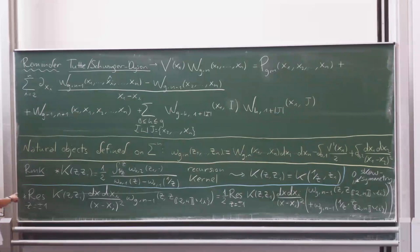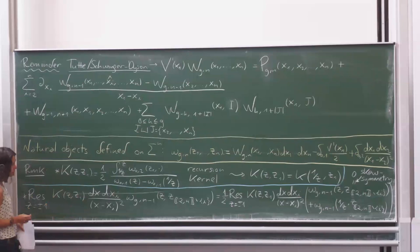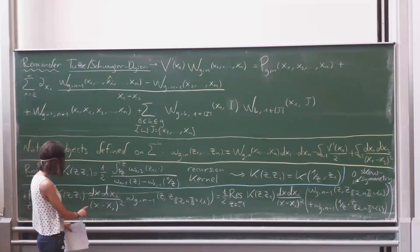We also have this definition — the kernel of the recursion, which you've probably seen before. It has the property that if you change z to 1/z it stays the same, because changing z changes the sign in the numerator and the same in the denominator. And this type of term also has that property because it just depends on x, not on z, so it stays the same when you change to 1/z.